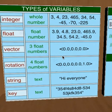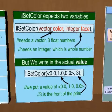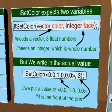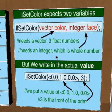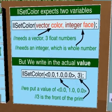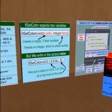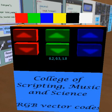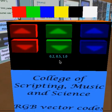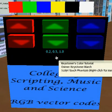Let's take a look at another function called setColor. SetColor uses two types of variables: a vector for the color, and an integer for which side of the cube to color. Coloring involves three numbers — the RGB. The first number represents red, the second green, and the third blue. The values range from 0.0 to 1.0.